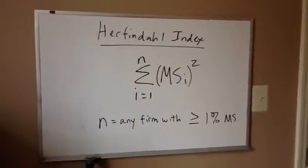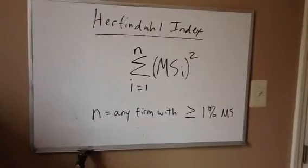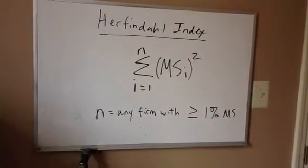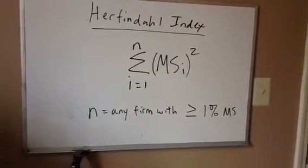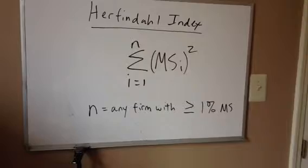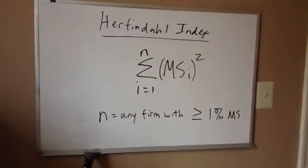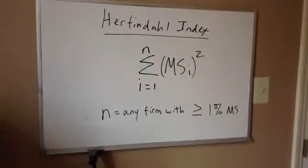Here we have the equation for the Herfindahl Index. If we had to put this in words, we would simply say that we're going to sum something. We see the summation sign. What are we going to sum? We're going to sum the square values of the market shares of all the companies in the industry. So we see MS squared. Make sure you square and then sum and that you never sum and then square. Always square and then sum.